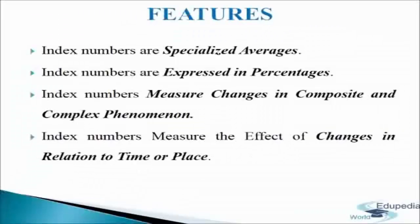The third feature is that index numbers measure changes in composite and complex phenomena. Index numbers are used to measure changes in magnitude of certain phenomena which are not capable of direct measurement, because certain phenomena are of composite and complex nature. For example, we cannot directly measure phenomena such as standard of living, cost of living, value of money, or purchasing power of people. Therefore, we study relative changes in such phenomena by examining variations in related factors.